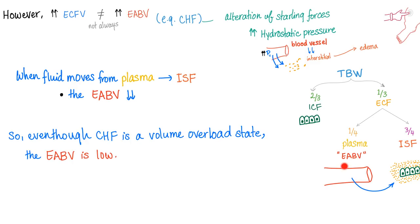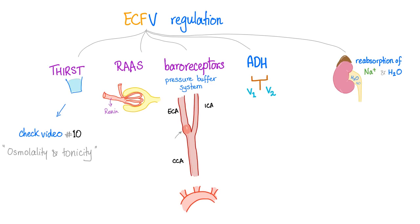When fluid moves from the vessel to the interstitial space, the effective arterial blood volume is going to be low. So words of wisdom: even though CHF is a volume overload state, the effective arterial blood volume is low. This is profound. To regulate the extracellular fluid volume, we depend on those five mechanisms.